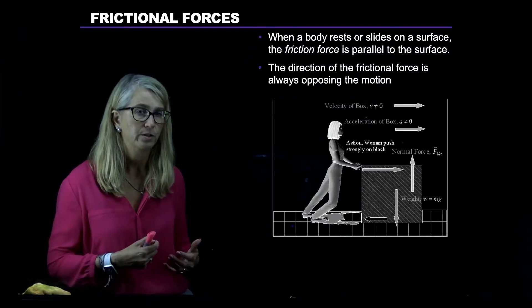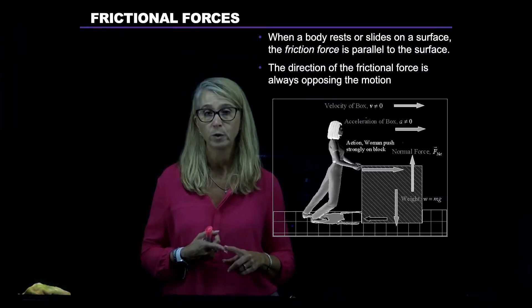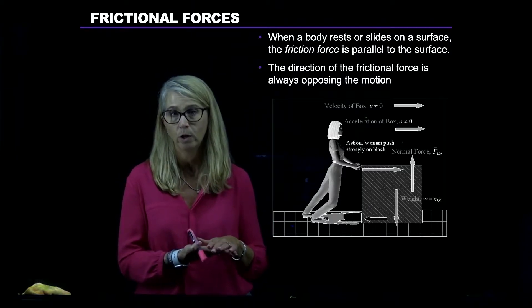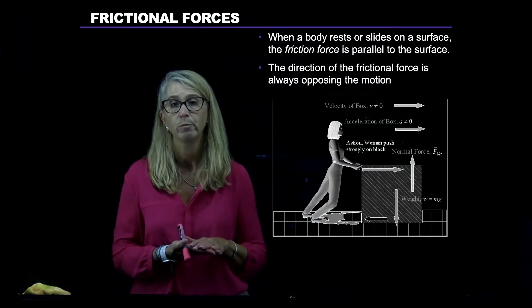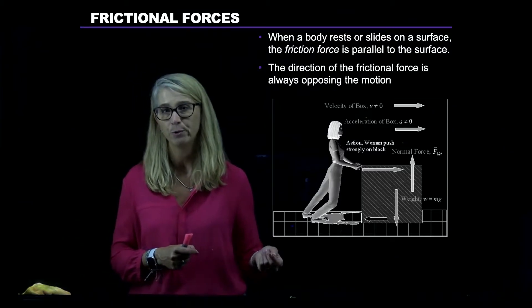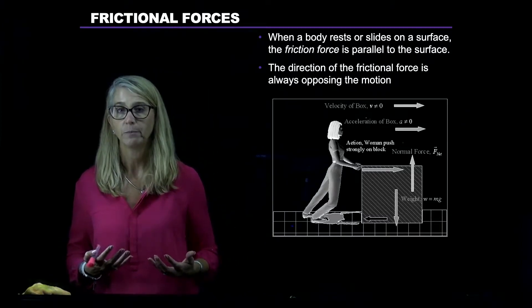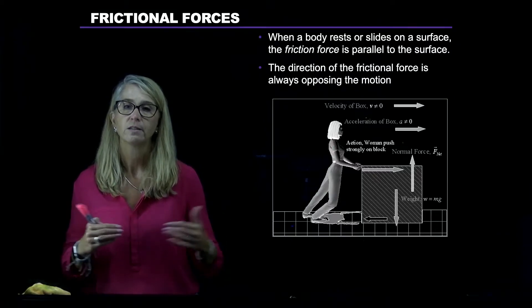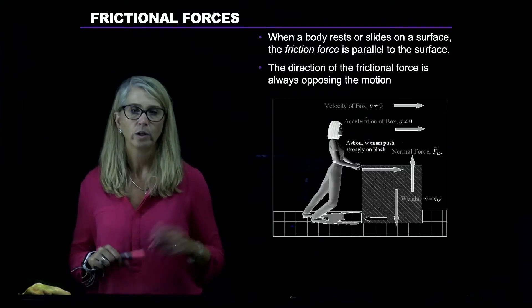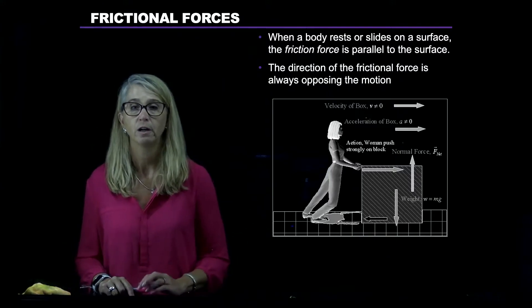There are two important things to understand. First, the direction of the friction force vector is parallel to the surfaces that are interacting — the bottom of the box and the floor. Second, the direction of friction is going to be opposite either the direction of motion or the direction of impending motion. Sometimes you try to push something and can't get it going — there's still friction in that case, in the opposite direction from the way things would start to move. Friction when the object won't move is different from friction when it's moving.